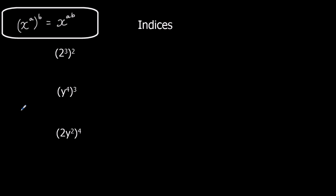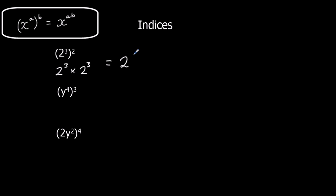And the last rule: when we've got a bracket, we have 2 cubed squared. We know squared means multiplied by itself, so we've got 2 cubed multiplied by 2 cubed. Following the first rule, when we multiply we add the powers, so it's 2 to the power of 6.